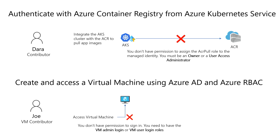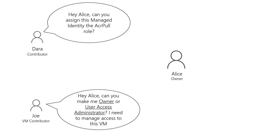So what can Dada and Joe do? Now they need to go and find Alice, who is the owner or a user access administrator in that subscription, and ask Alice to create these role assignments on their behalf or grant them the owner or user access administrator role. But these roles — the owner and user access administrator roles — are very high privilege on Azure RBAC, so Alice will be very reluctant to just give that away.